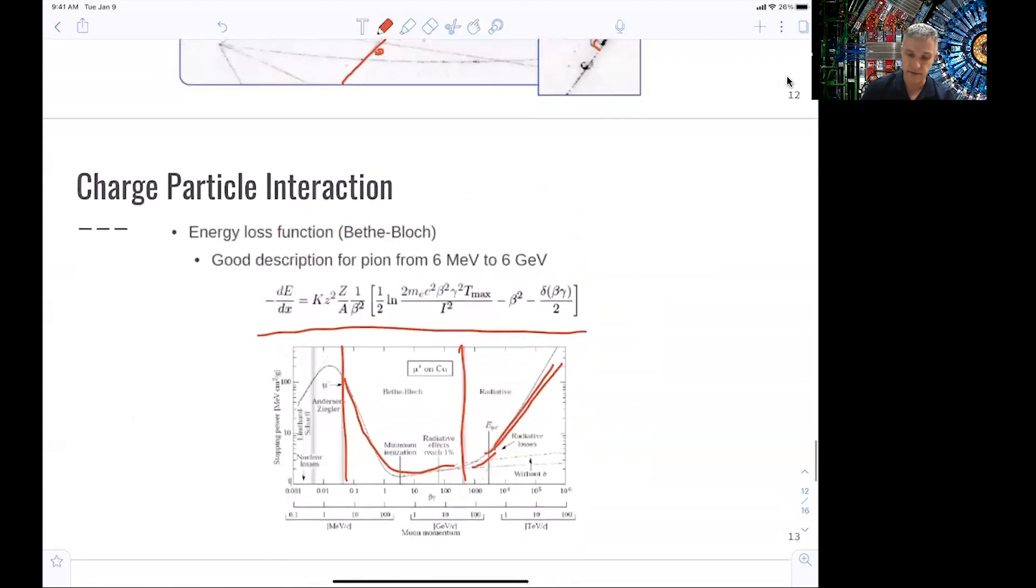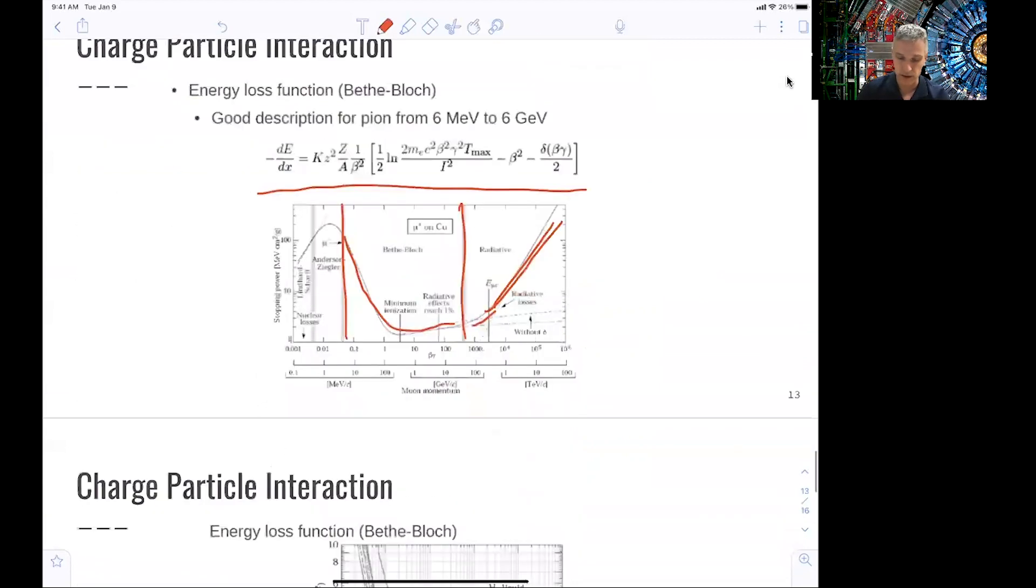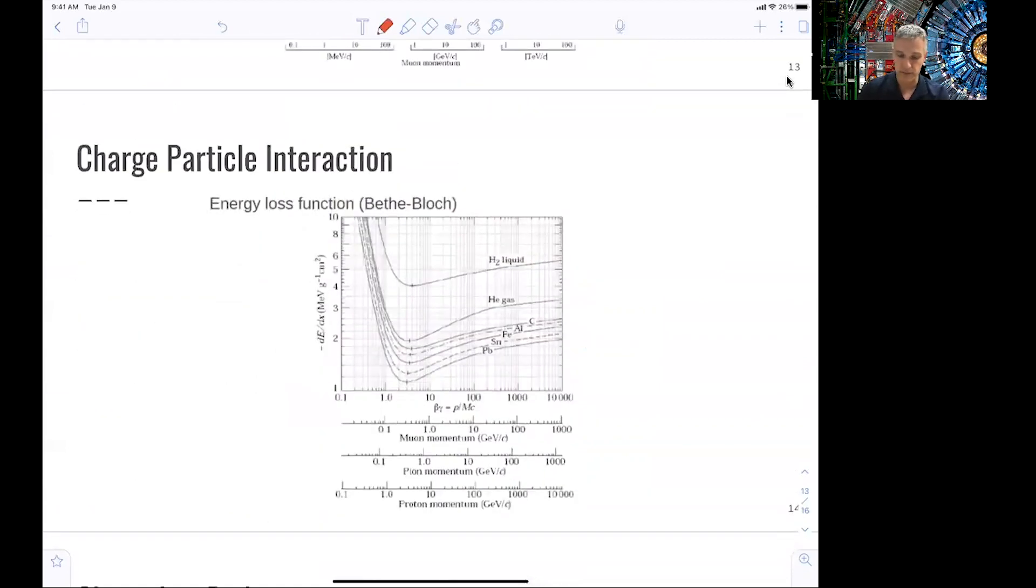So we can study the details of this Bethe-Bloch formula. One interesting point is the particle dependency of the energy loss. And you see this here shown for a muon, for a pion, and for a proton. If you measure the energy loss of a specific particle in a reasonable momentum range, you can use that information in order to learn which particle traveled through your detector. So you can use energy loss in some cases in combination with a momentum measurement in order to identify particles.